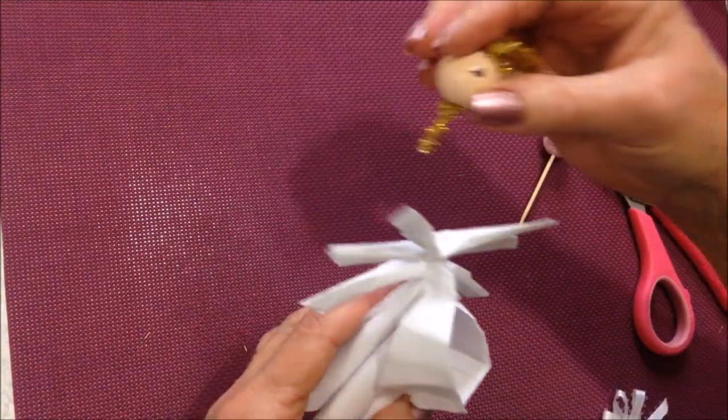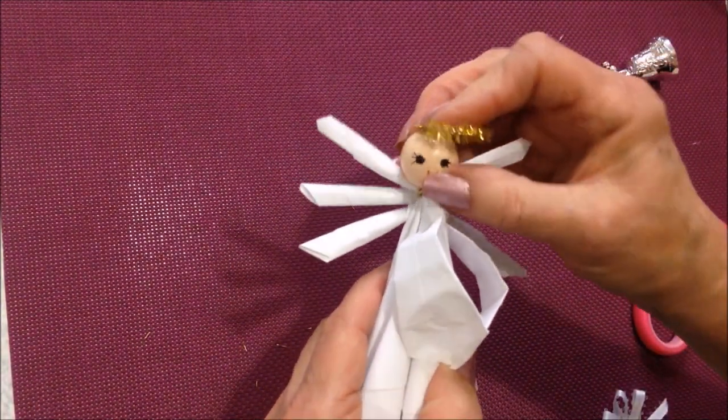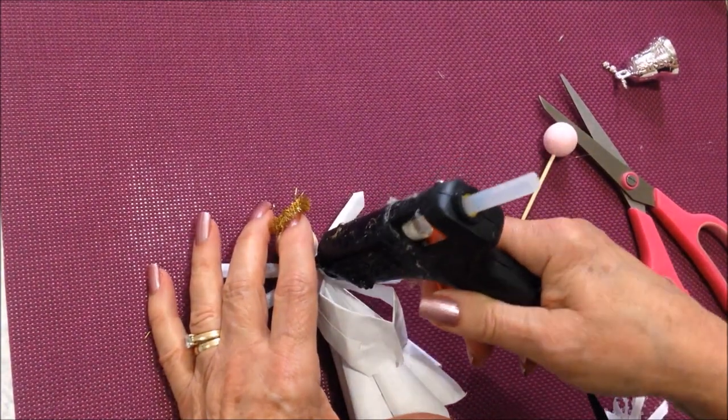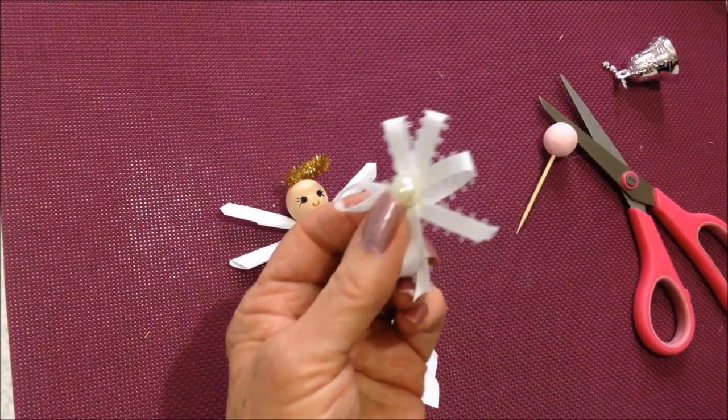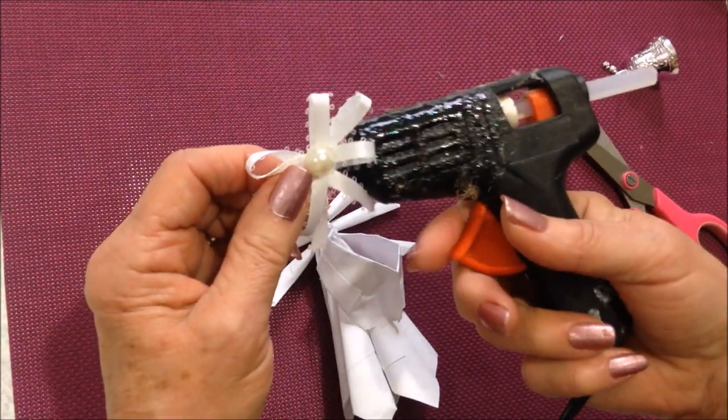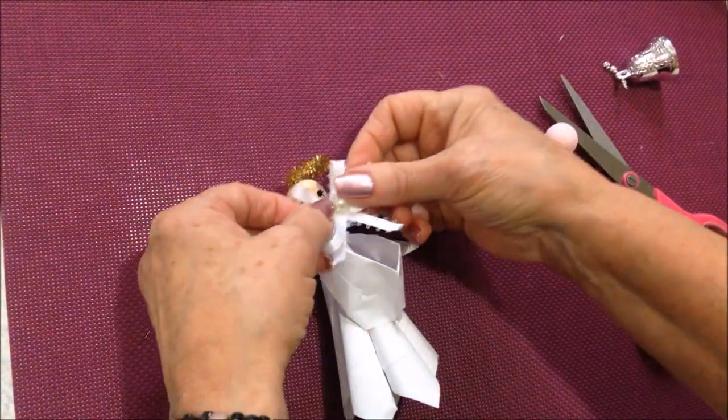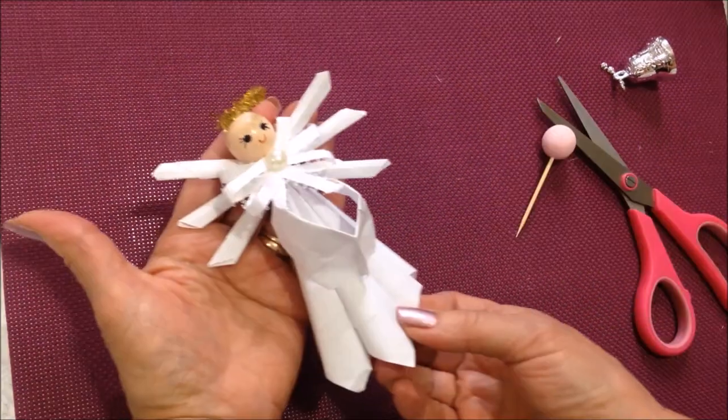And I think I'll use this one. So I'll tuck that down inside and put some hot glue in there. And I have a little bow and I'm going to put some hot glue in the back and I'm going to glue that at the neck like that.